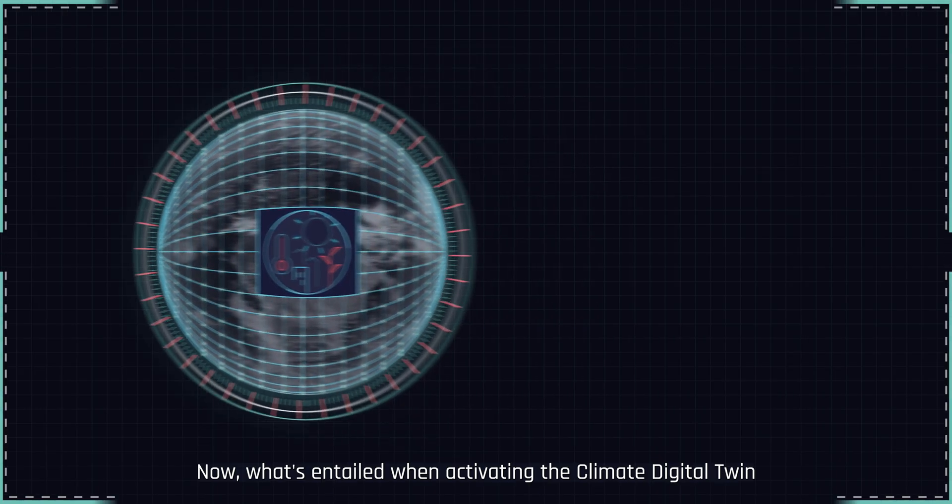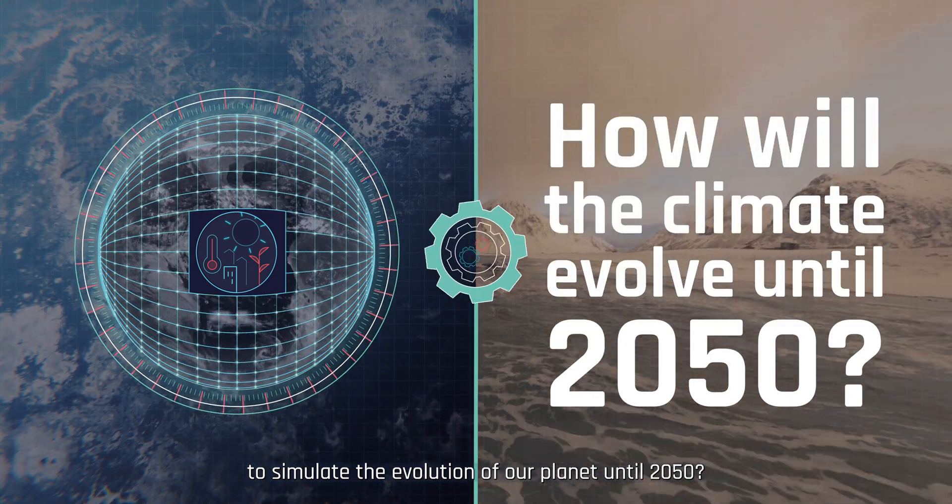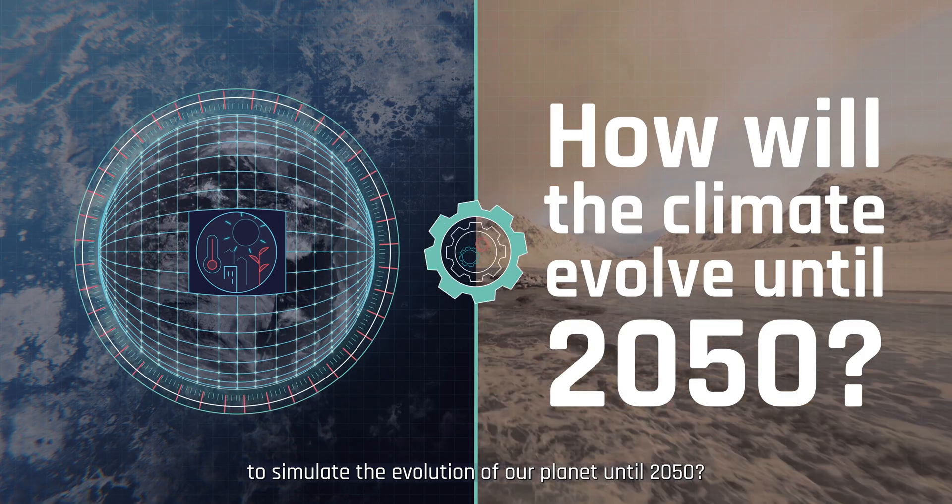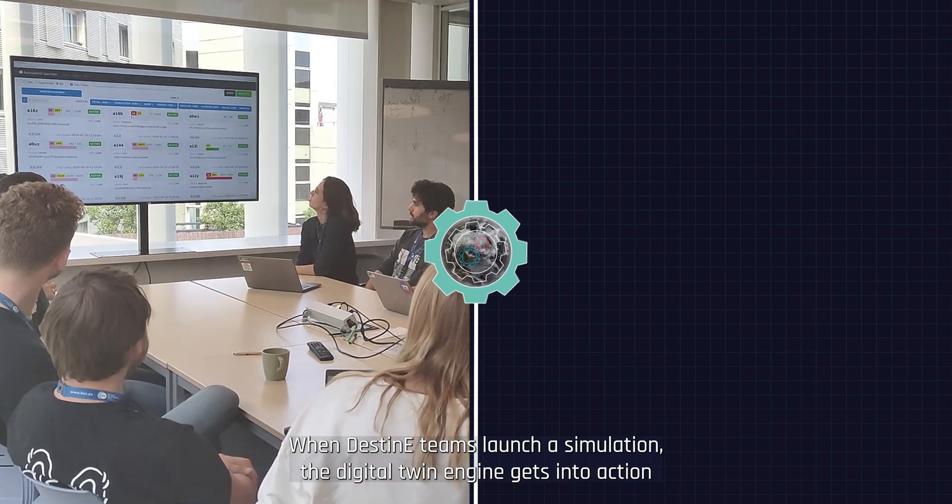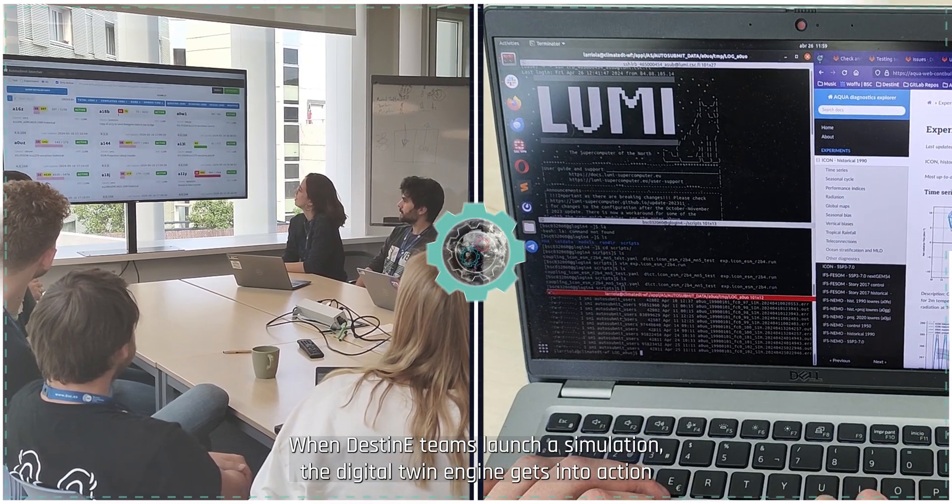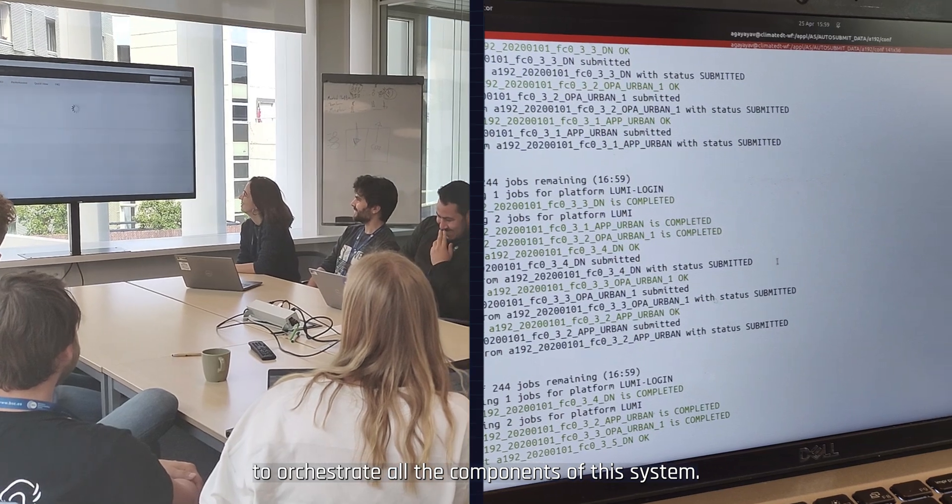Now, what's entailed when activating the Climate Digital Twin to simulate the evolution of our planet until 2050? When Destiny teams launch a simulation, the Digital Twin engine gets into action to orchestrate all the components of this system.